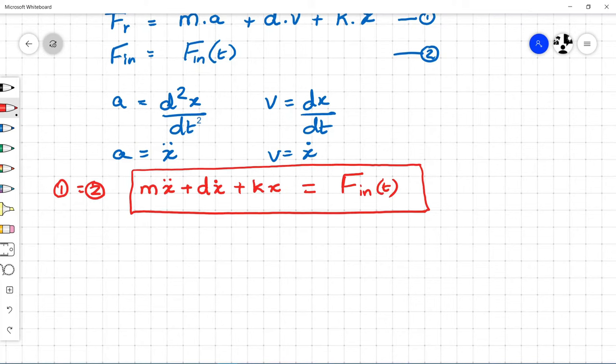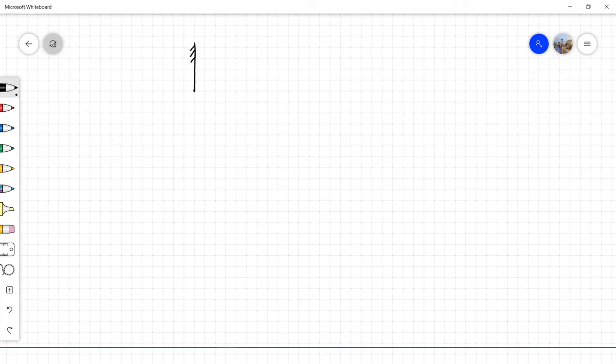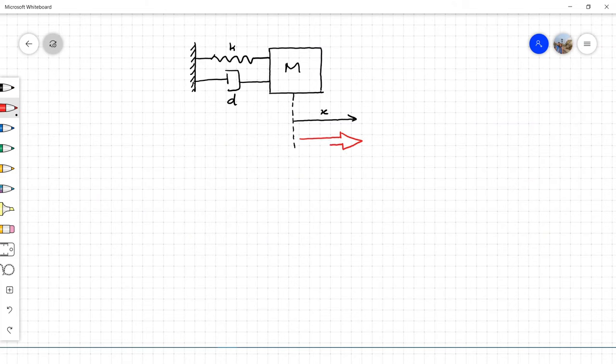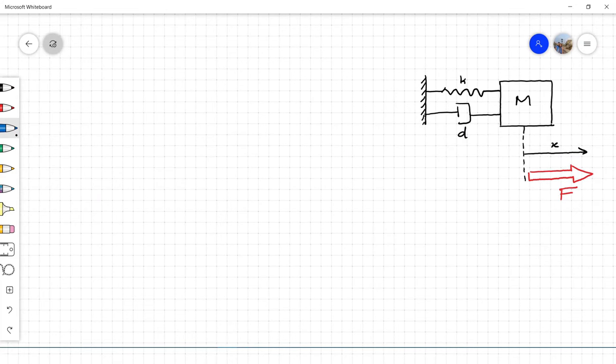This equation should be rearranged for modeling purposes. For modeling, we need the equation with x double dot on the left hand side and rest of parameters on the right hand side.